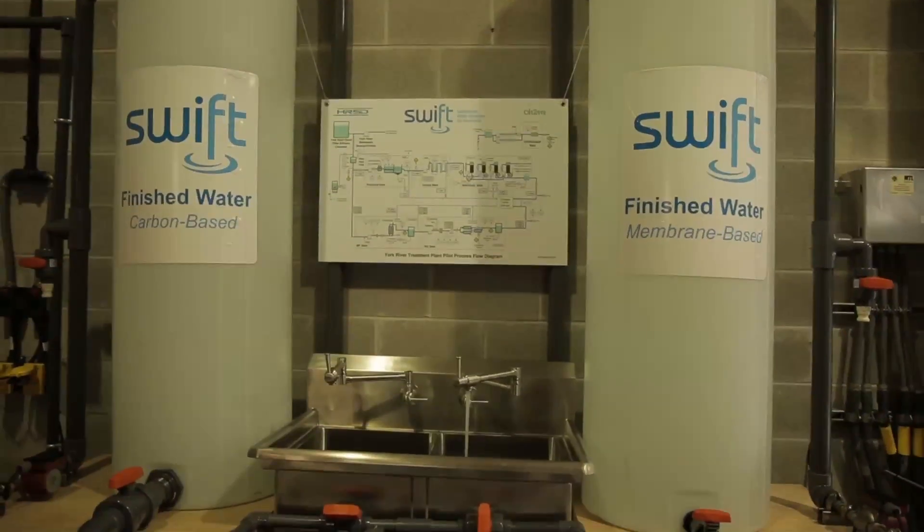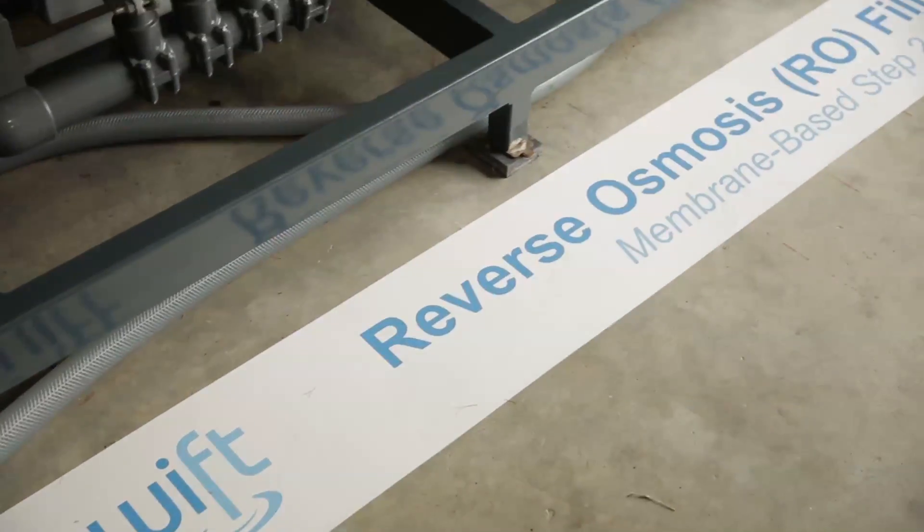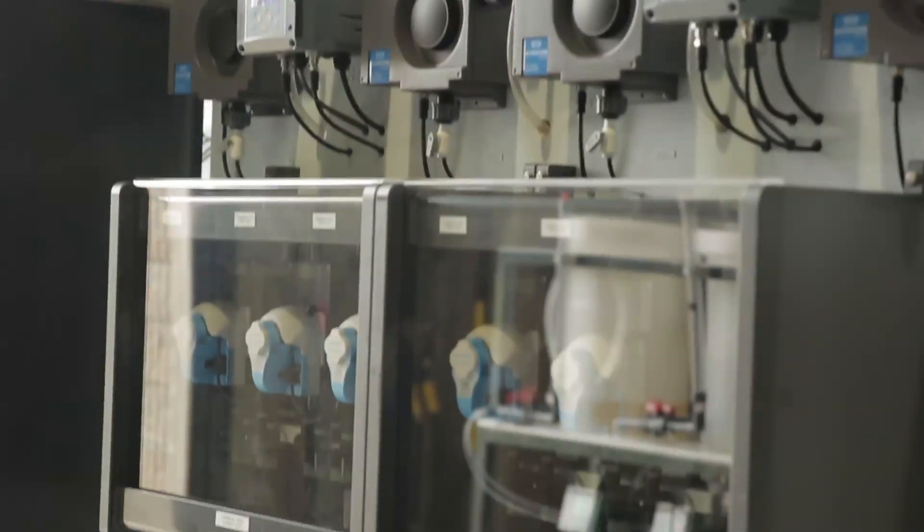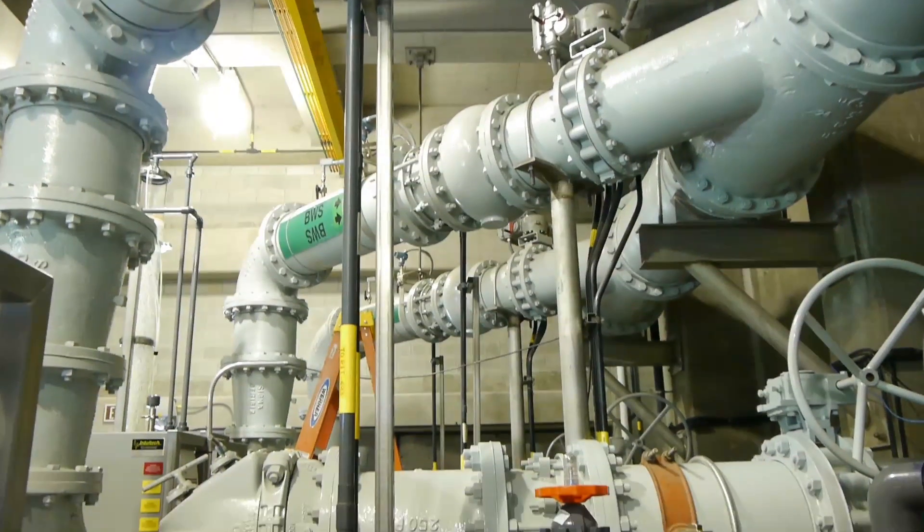Our treatment trains operate in two ways. One treatment train has a membrane process, which excludes particles and helps remove pathogens and pollutants. And the other treatment train has a carbon-based filtration system that also does the same.